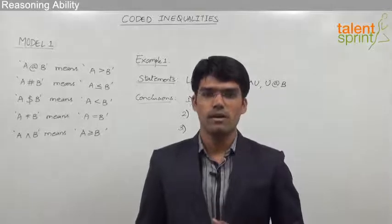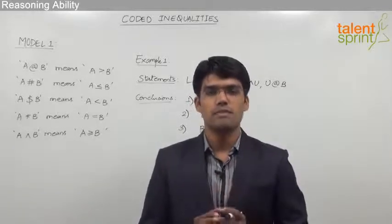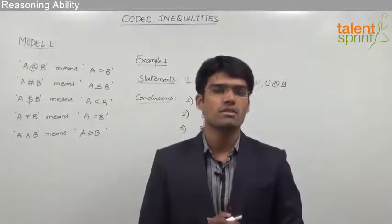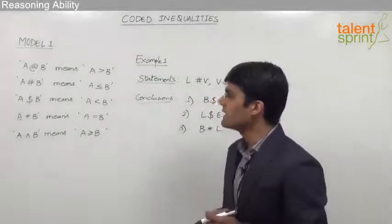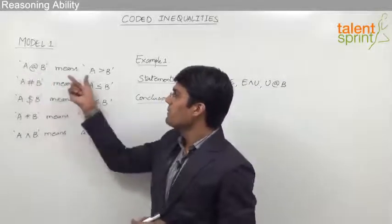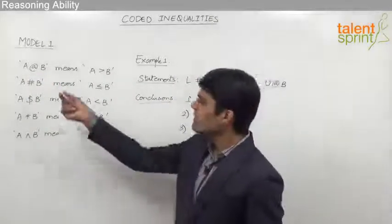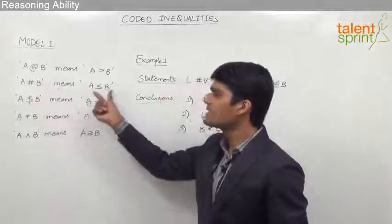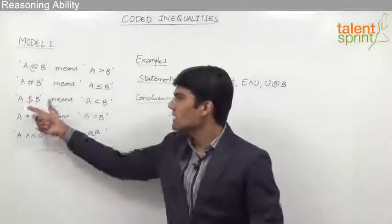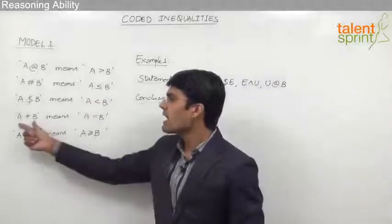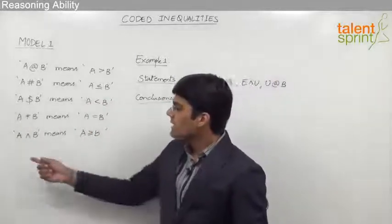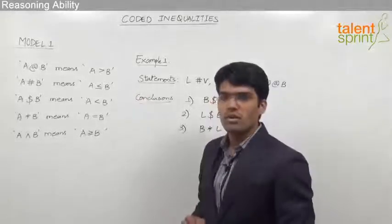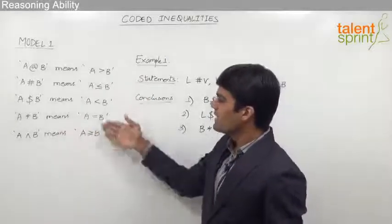Let us now take the first model from coded inequalities, where different symbols are used to represent the relationship between two variables, based on which we are supposed to find out which of the given conclusions are true. The given information: A @ B means A is greater than B; A # B means A is less than or equal to B; A $ B means A less than B; A * B means A is equal to B; and A ^ B means A is greater than or equal to B.